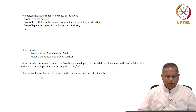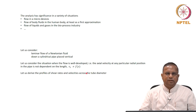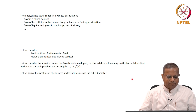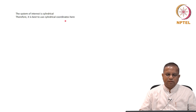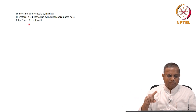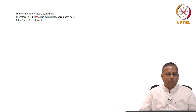We are going to derive the profiles of shear rates and velocities across the tube diameter — that is our main interest here. This is useful hugely in analysis, design, and operation. The system of interest is cylindrical, so it is best to use a cylindrical coordinate system. Refer to table 3.4-2 — go to that table and take a look at the copy you made.